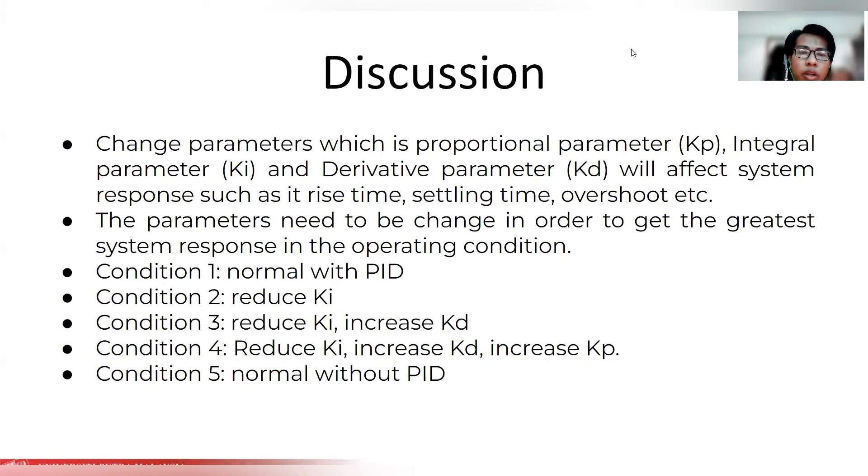For condition 1, the normal condition with PID, the proportional parameter is 1, integral parameter is 1, and derivative parameter is 1. From the result, the graph shows the steepest slope in rise over time. For condition 2, we reduce Ki, which is the integral parameter, and it changed to a gradual increment compared to condition 1. For condition 3, we reduce the integral parameter and increase the derivative parameter. The graph shows the slope is slightly lower compared to the second condition because the derivative parameter function is to anticipate the error.